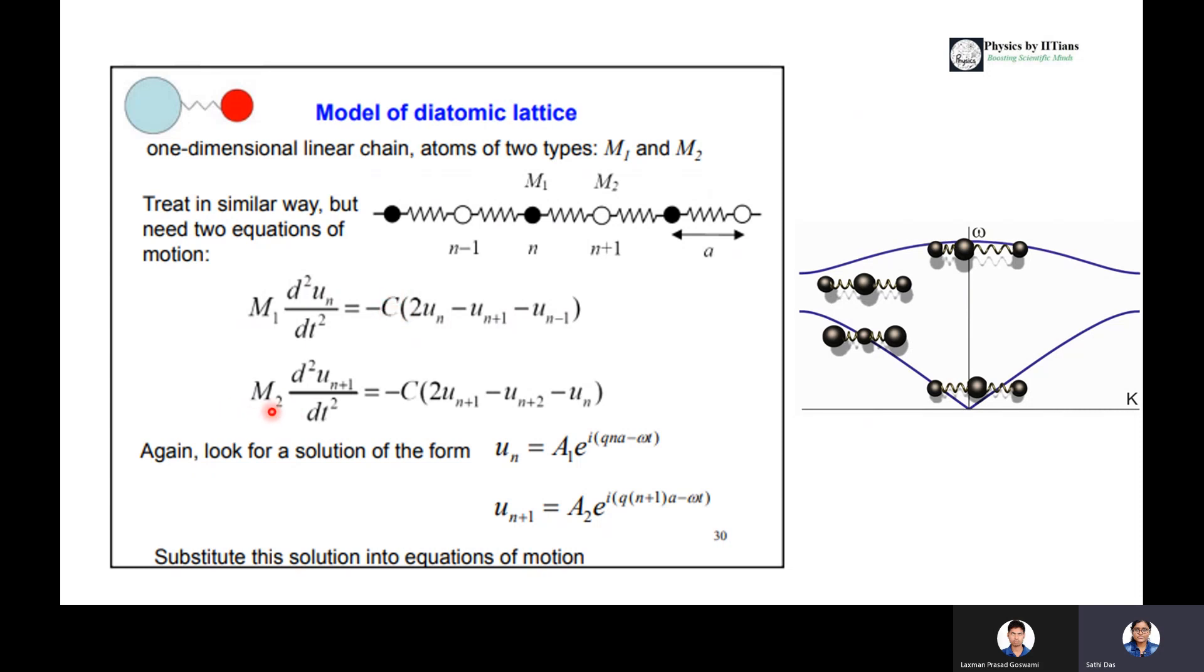For M2 atom, we can write M2 d²un+1/dt² equals minus C times (2un+1 minus un+2 minus un). Look here, the displacement at position un is of the type of atom M1 and the displacement at position n plus 1 is of type M2. So we are considering the motion of atoms of two types.